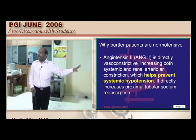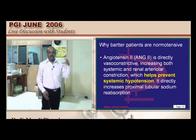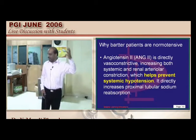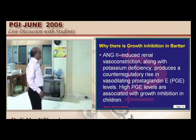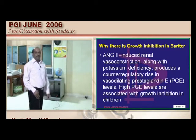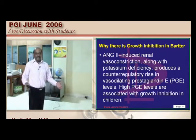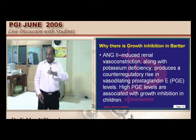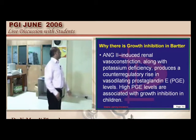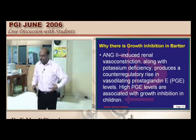Despite high angiotensin II (a vasoconstrictive agent), Bartter patients remain normotensive. Angiotensin II's renal vasoconstriction triggers counter-regulatory increases in prostaglandin levels (vasodilators). These increased prostaglandins are responsible for the growth retardation features seen in Bartter syndrome. Bartter patients also have high proclivity to develop nephrocalcinosis and renal stones.